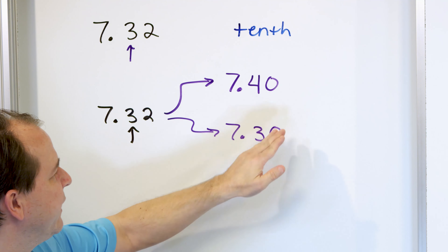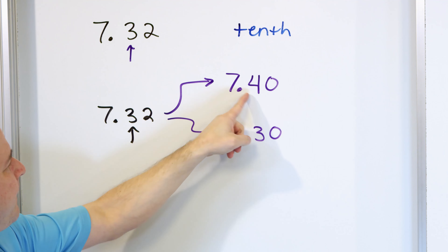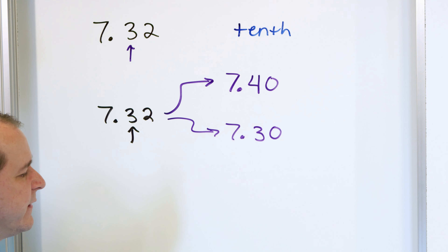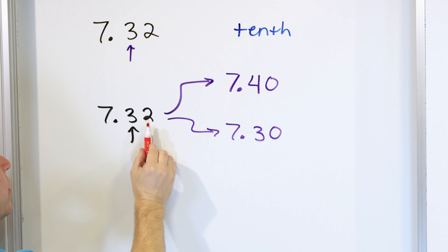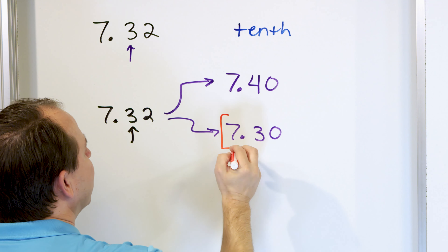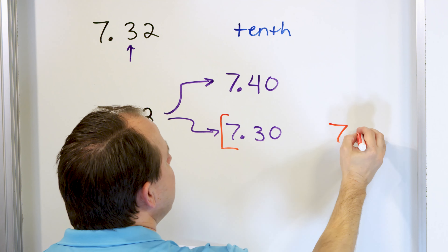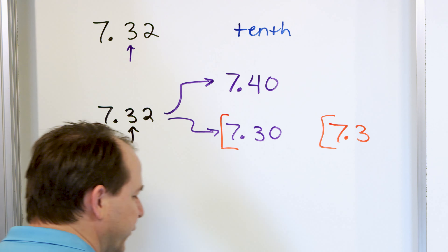We're rounding either up to seven point four or down to seven point three — the trailing zero isn't necessary. To decide, we follow the same rule: look at the next-door digit. In this case it's a two, which is less than five. Remember, four, three, two, one, or zero means we round down. So the answer is seven point three, because seven point three zero is exactly the same thing as seven point three.